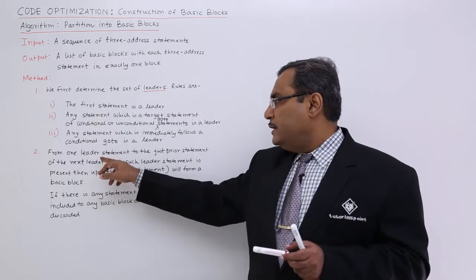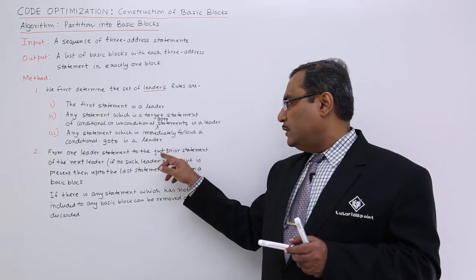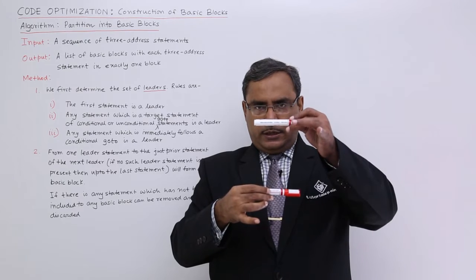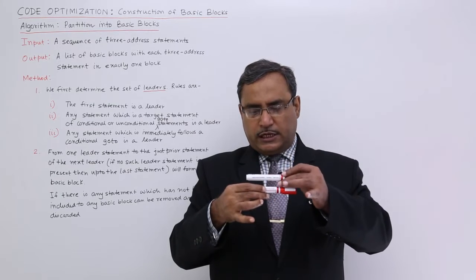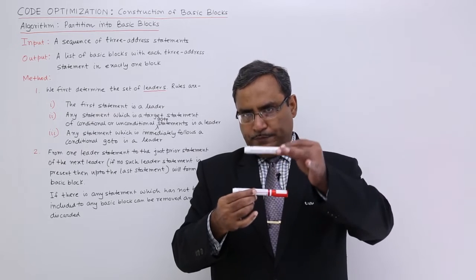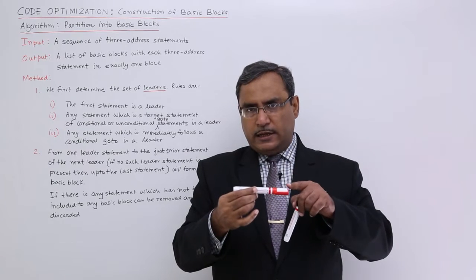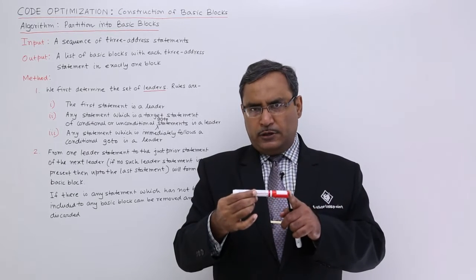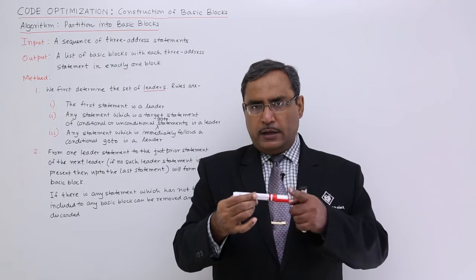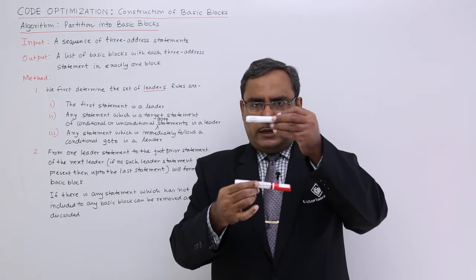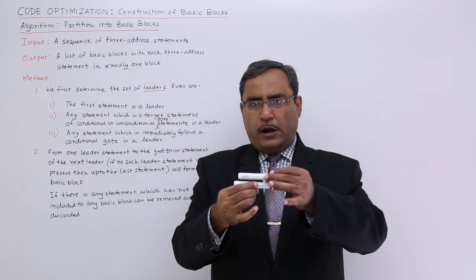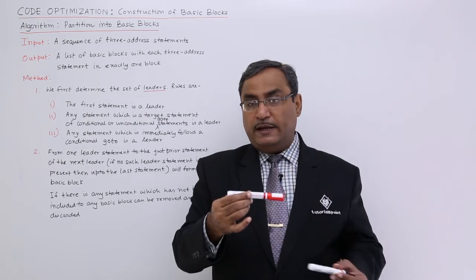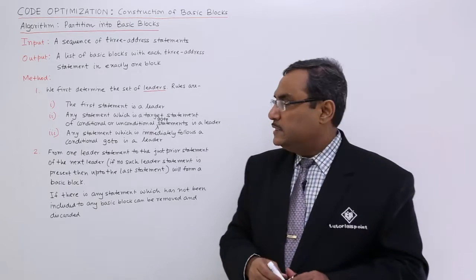From one leader statement to the statement just prior to the next leader forms one basic block. So, from this leader up to the statement just before the next leader is one basic block. Now, if there is no leader statement afterwards, then from this particular leader statement to the last statement will form another basic block.